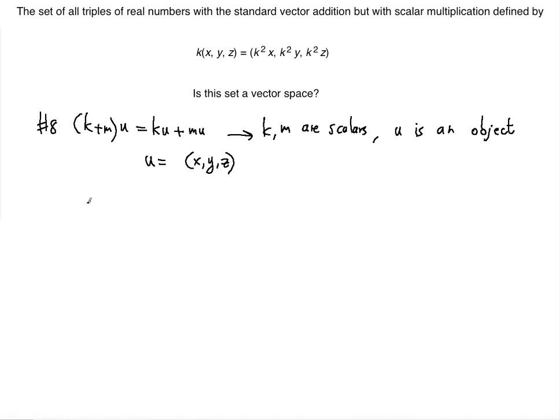Let's test this. K plus M multiplied by U, so K plus M U is going to be K plus M multiplied by XYZ. And that gives you what? Remember we have to make sure that we follow the constraint. So basically what you do here is you substitute K with K plus M in the definition.